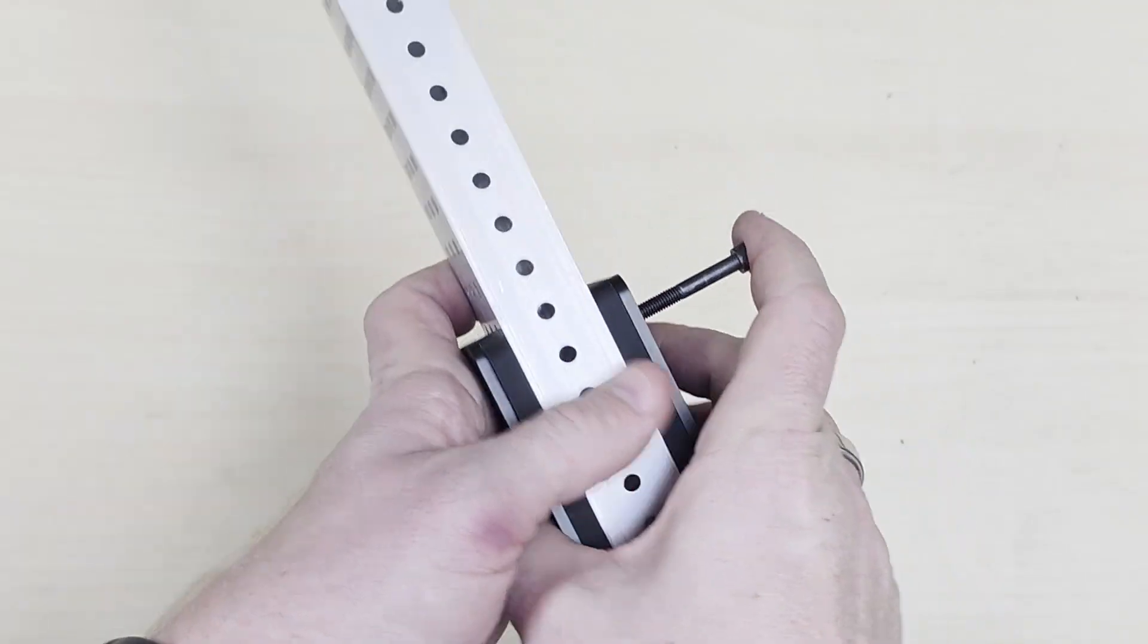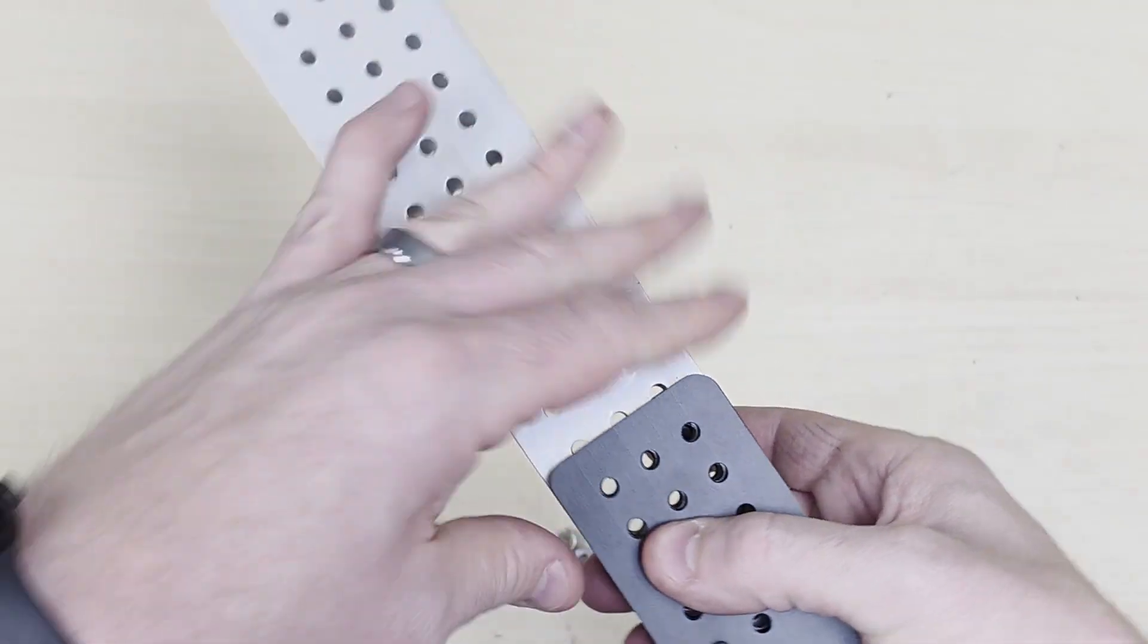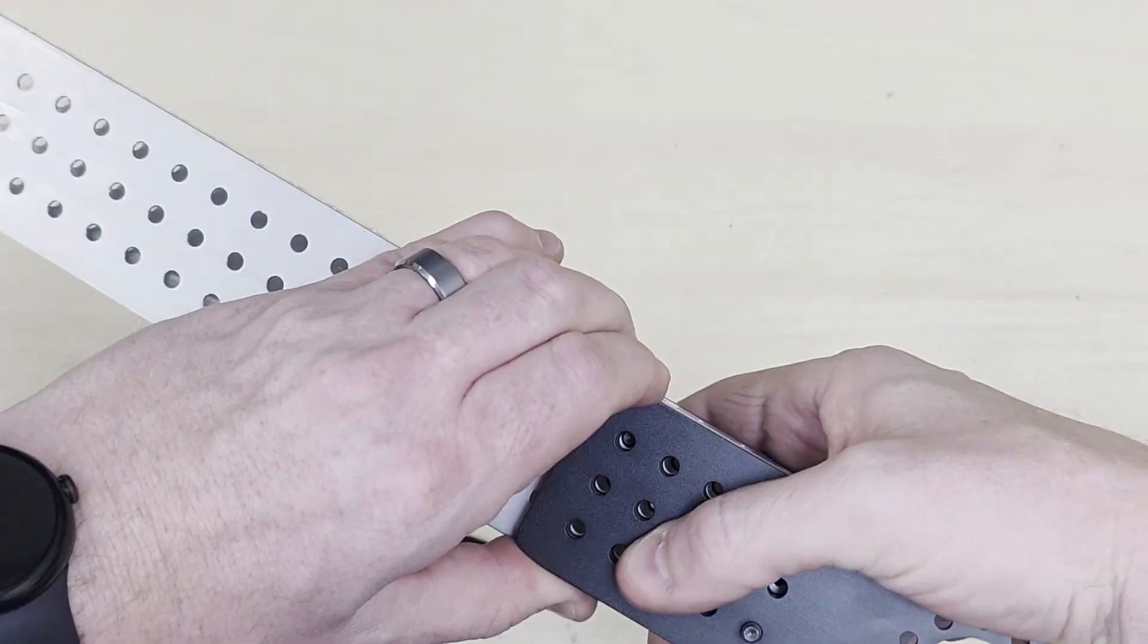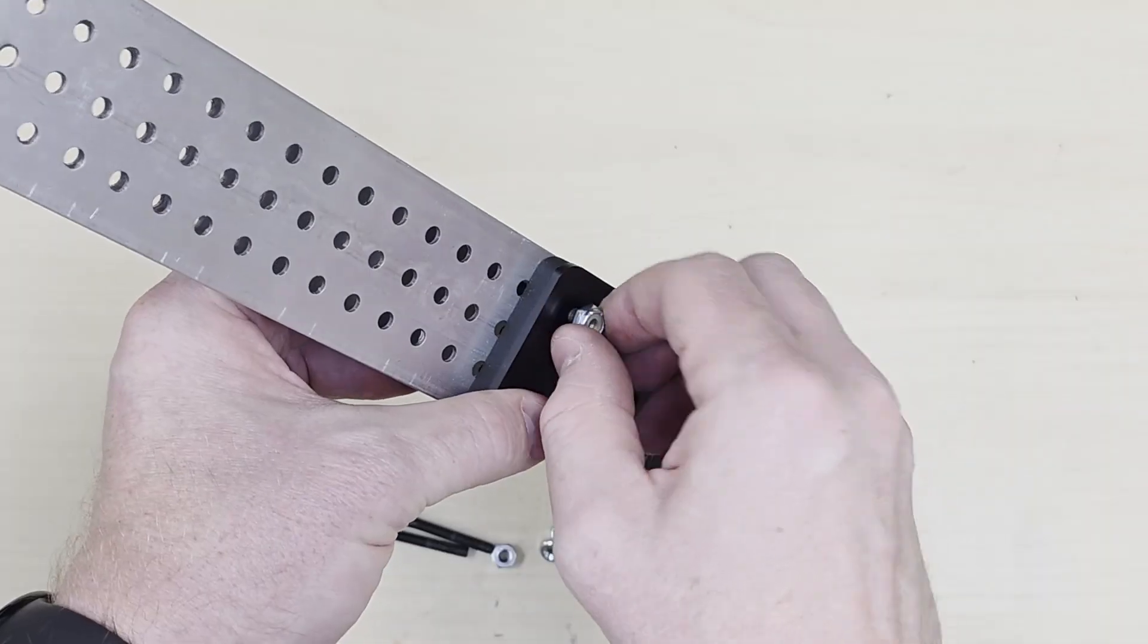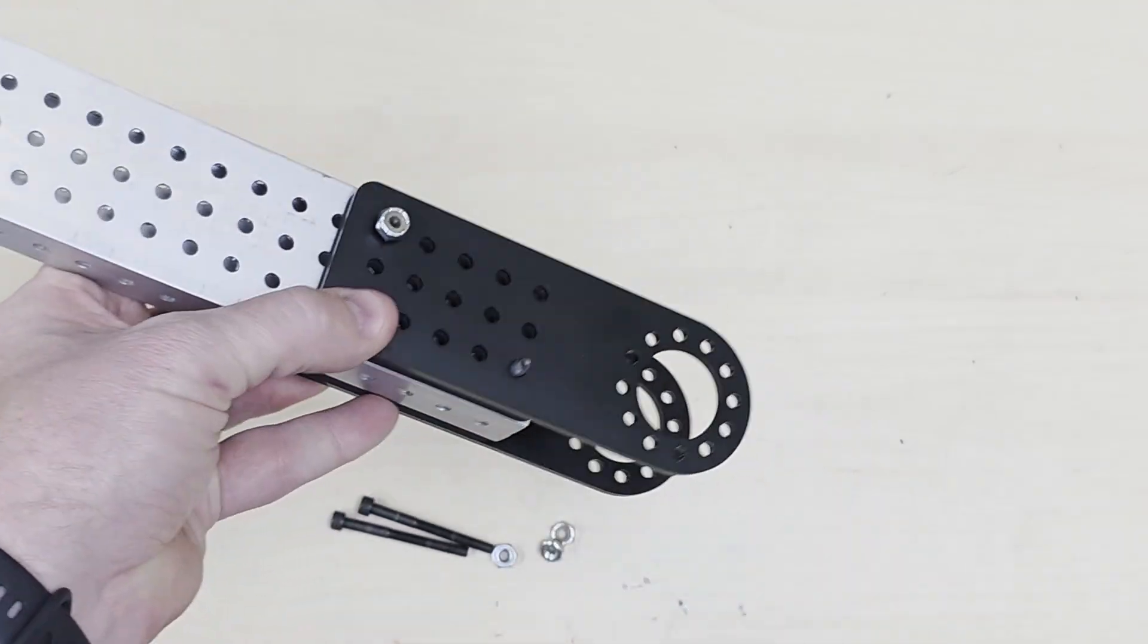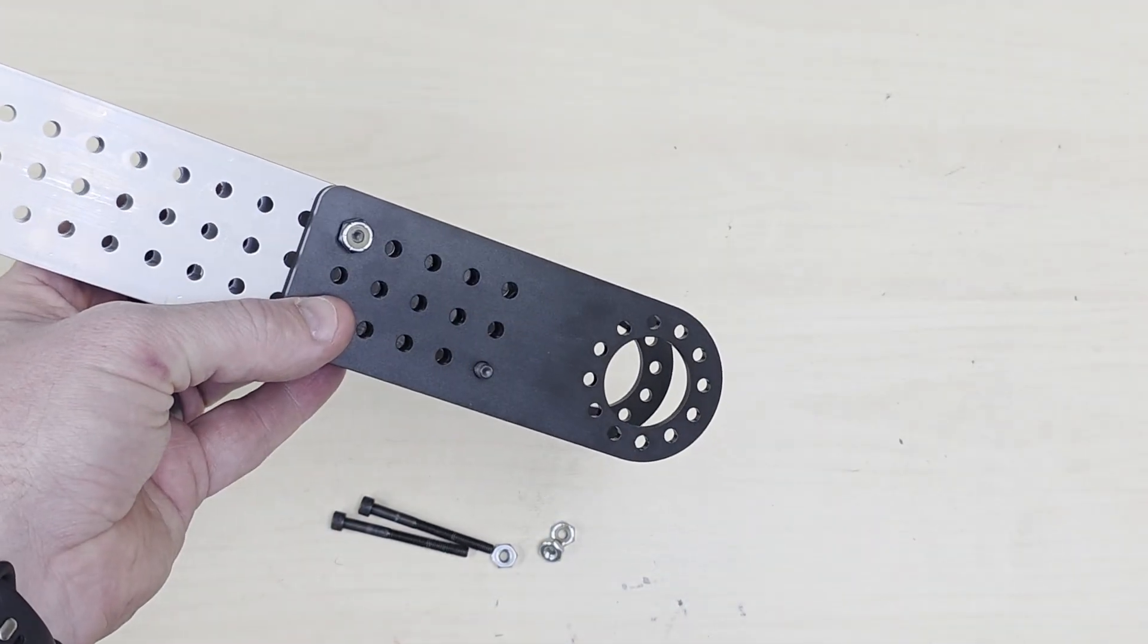Get a couple of bolts going through to make all the holes line up with each other. Use the included 10-32 lock nuts and start to tighten those up by hand.